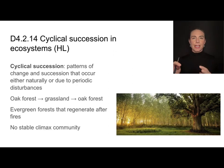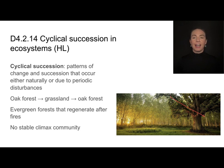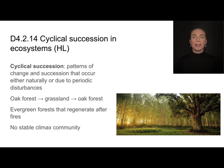Now, ecological succession can be linear or cyclical. Cyclical succession involves patterns of change that occur either naturally or due to periodic disturbances. For example, an oak tree dominates an oak forest ecosystem, but when it drops its seeds, those seeds are very intolerant of shade and can't grow under the canopy. So very few new oak trees are produced. Eventually when all the oak trees die out, the ecosystem becomes dominated by grass and turns into a grassland. But oak seeds that dropped previously thrive in the grass, so new oak trees grow and it reverts back into an oak forest — a cyclical succession.